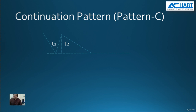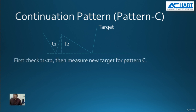After the bottom reversal, we want to see whether the movement has the power to move up or not. There is a target, and the requirement of continuation pattern rules is that time frame one must be less than time frame two. The demand line must be higher than the seller line, or the supply line. If this happens, or if we see this from the bottom reversal pattern, then we can make a new target.